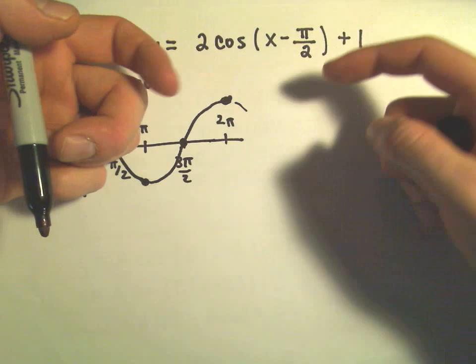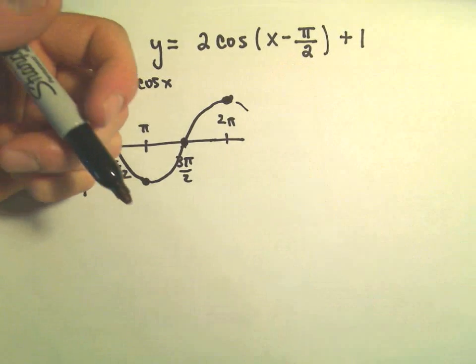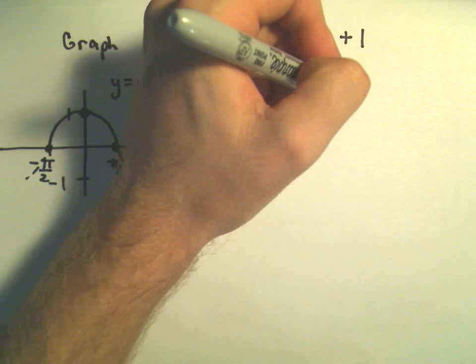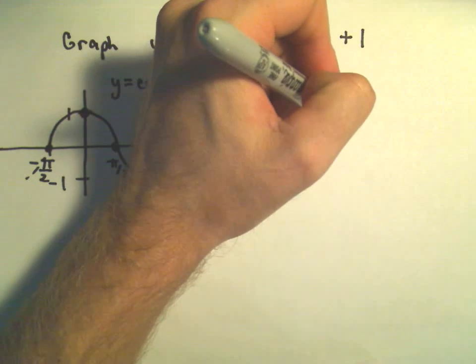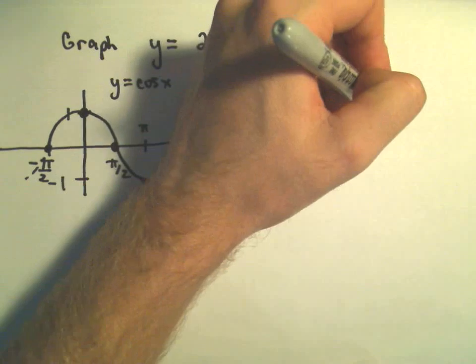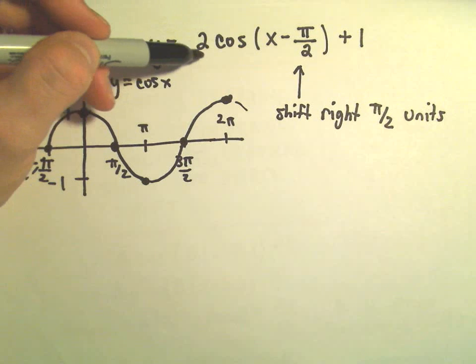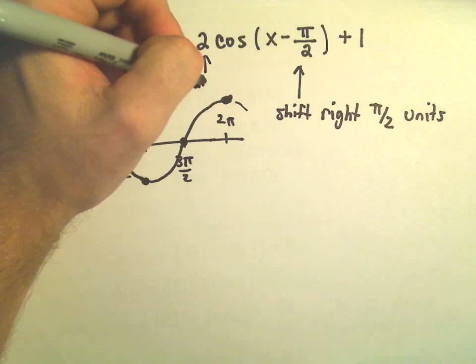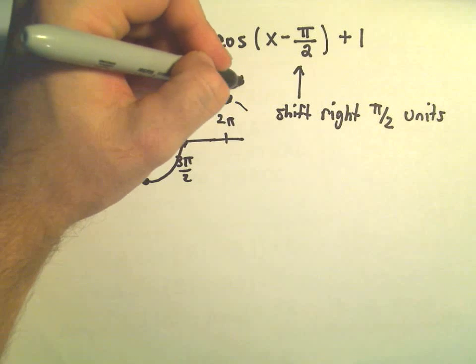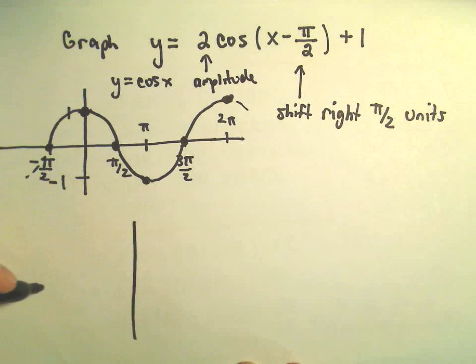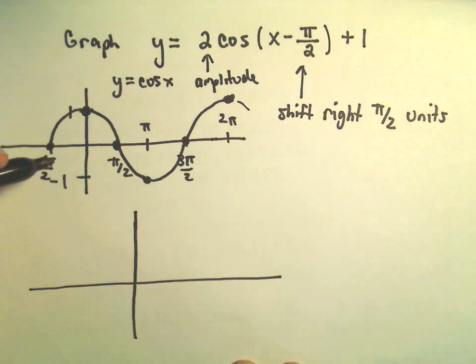The first thing I'm going to think about is this phase shift. Since we see negative pi over 2, this means we're going to shift the graph of cosine to the right by pi over 2 units. I'm going to do another thing at the same time as well, and all the 2 is going to do is just change the amplitude. So instead of going up to positive 1 and negative 1, we'll now go up to positive 2 and to negative 2.